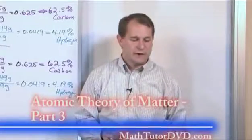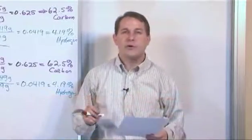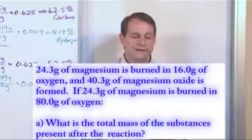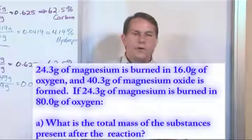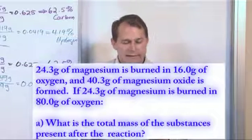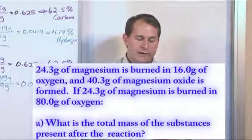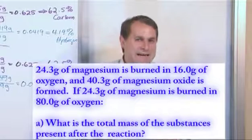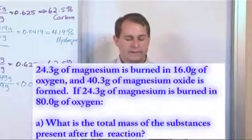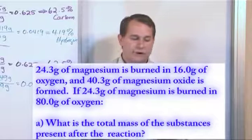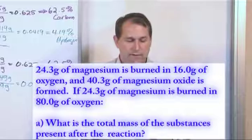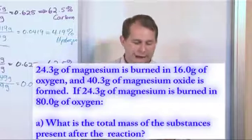Okay, our next problem goes as follows. 24.3 grams of magnesium is burned in 16 grams of oxygen gas, and 40.3 grams of magnesium oxide is formed from this reaction. If 24.3 grams of magnesium is burned in 80 grams of oxygen gas, we have several parts to this problem. The first one is, what is the total mass of the substances present after this reaction?